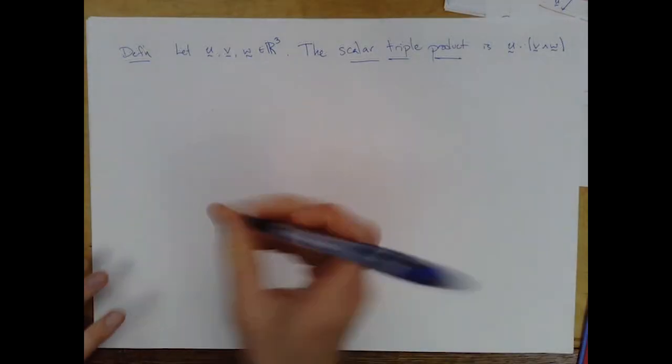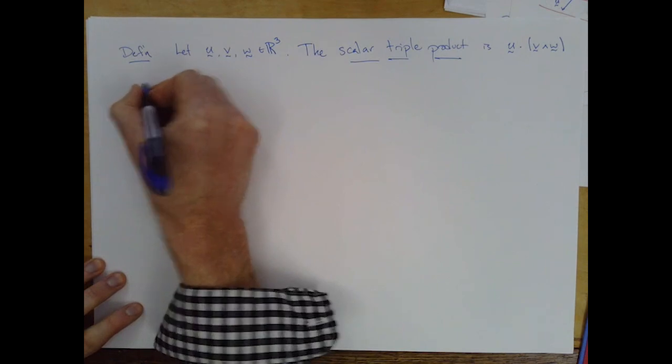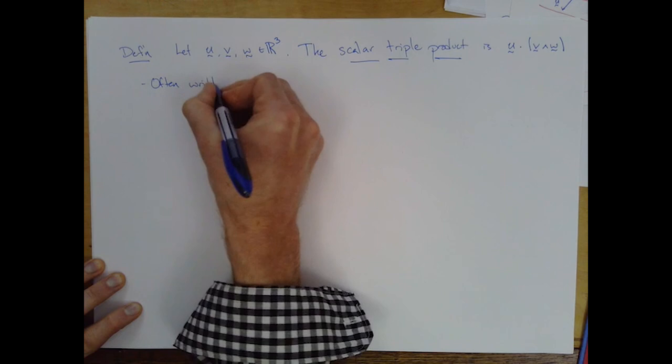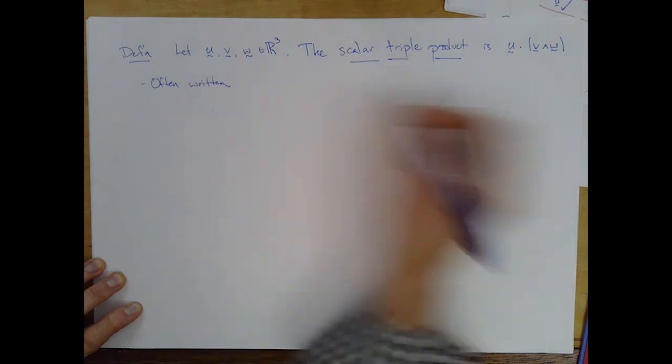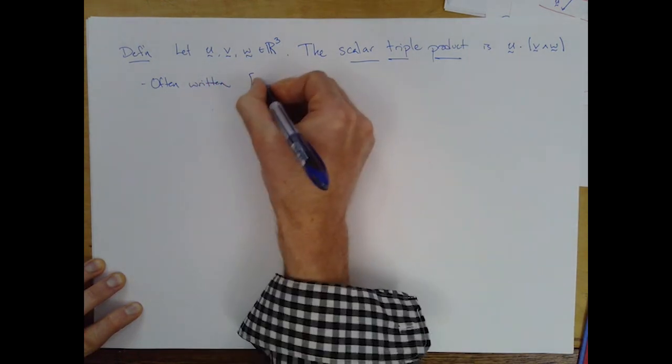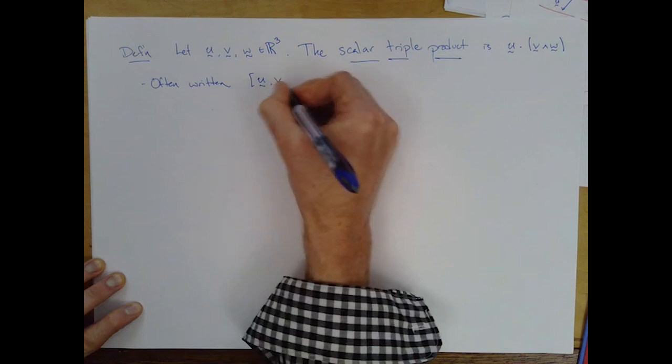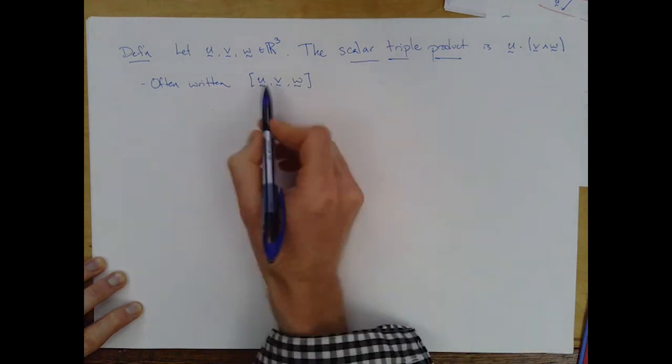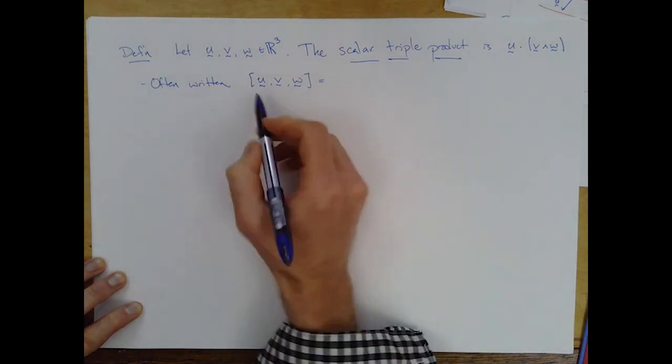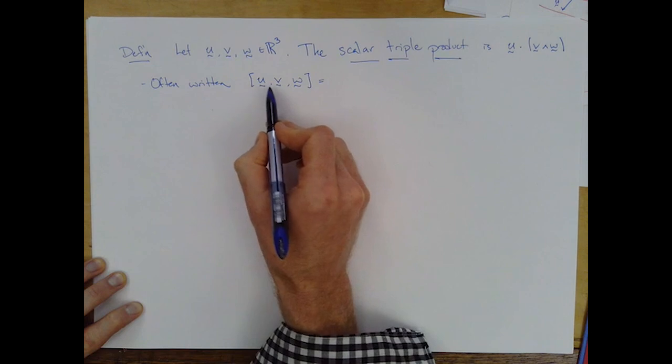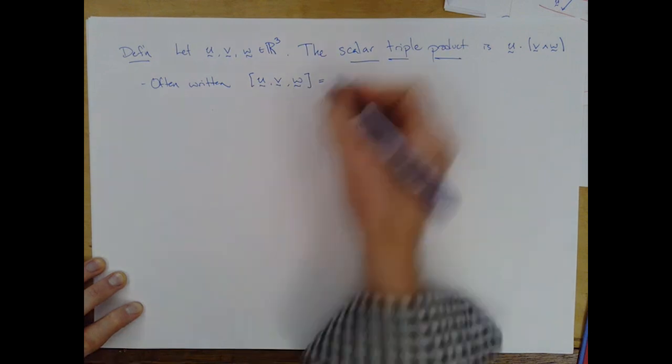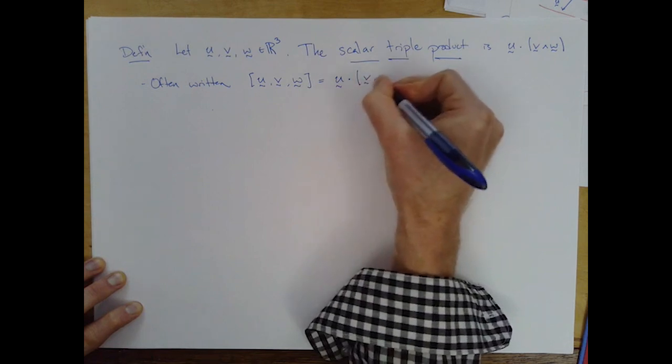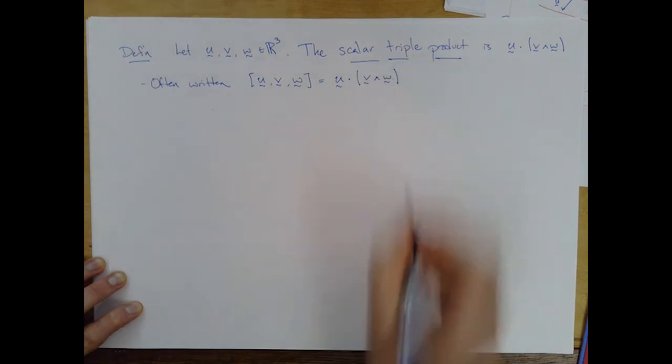Okay, notation-wise, this is often written as this bracket notation u, v, w. And I'll write this again just so we're clear on the order here: bracket u comma v comma w is the scalar triple product u dotted with v cross w.